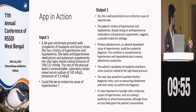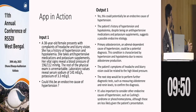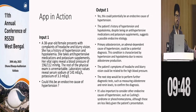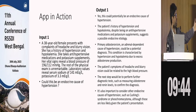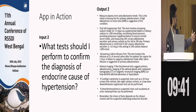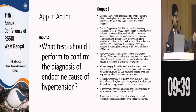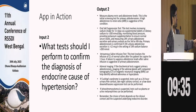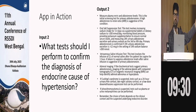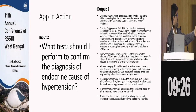The answer says yes, it could be a potential endocrine cause, and it tells you the reason why. As a follow-up question, we ask: 'What test should I perform to confirm the diagnosis of an endocrine cause of hypertension?' It gives you: measure plasma renin-aldosterone ratio, oral salt suppression test — it also tells you the confirmatory test, addressing resistant hypertension with hypokalemia.